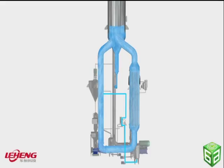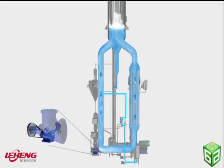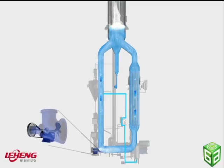The forced circulation pump will be switched on as the liquid level reaches a desired level in the crystallization separator, so that the liquid circulation commences.